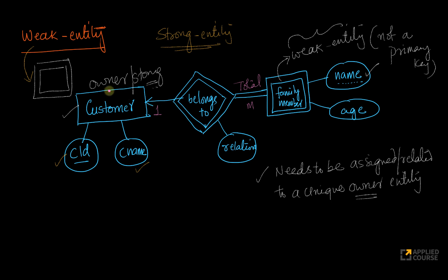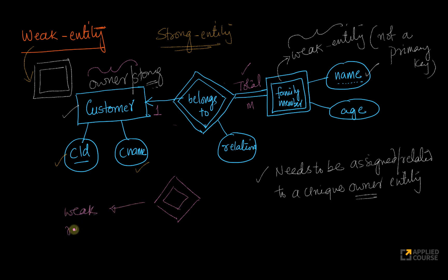This is total participation on the family member side, meaning every family member must be related to a unique customer. Some customers may not add family members — that's perfectly fine, so the customer side is not total. The relationship between the owner entity and the weak entity uses a diamond within a diamond, which represents a weak relationship. A weak entity participates totally in this weak relationship, and it is a one-to-many relationship.